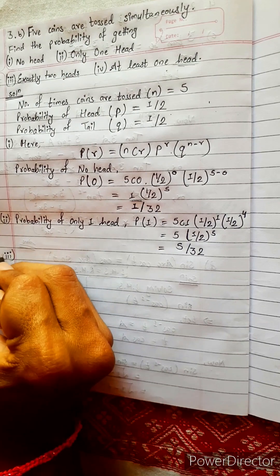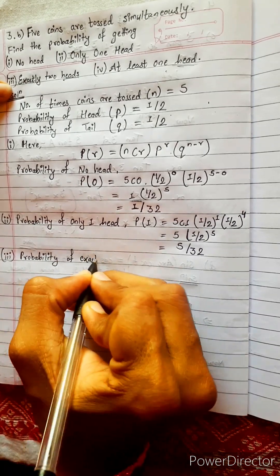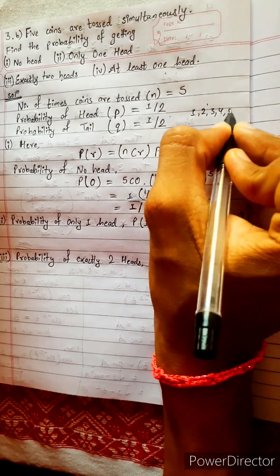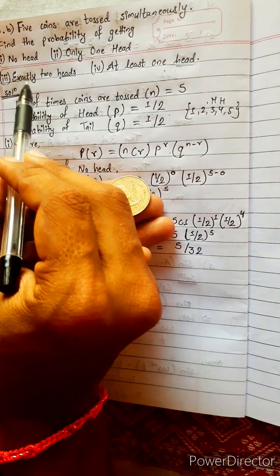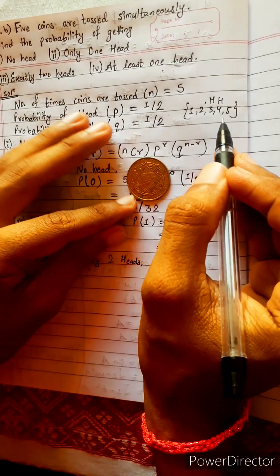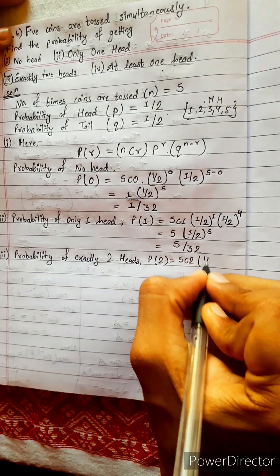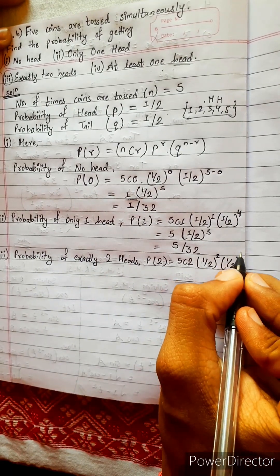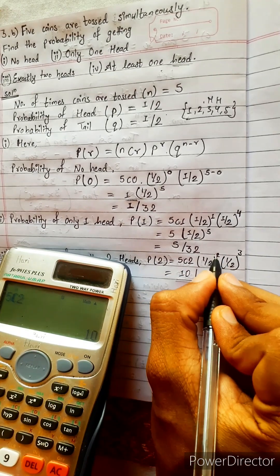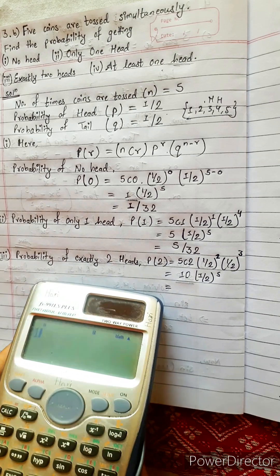Problem three: probability of exactly two heads. This means in five tosses, exactly two result in heads and the rest are tails. P(2) = 5C2 × (1/2)^2 × (1/2)^(5−2) = 5C2 × (1/2)^2 × (1/2)^3. Since 5C2 equals 10 and 2+3=5, this gives 10/(2^5) = 10/32, which simplifies to 5/16.